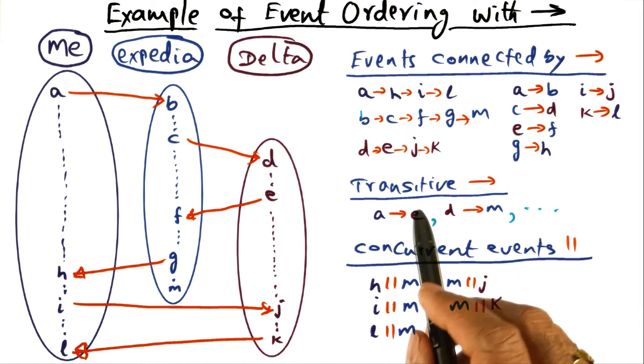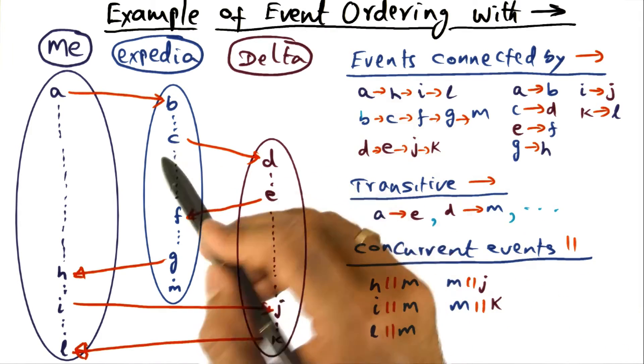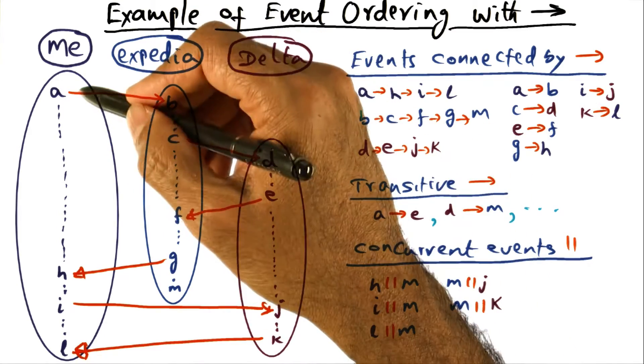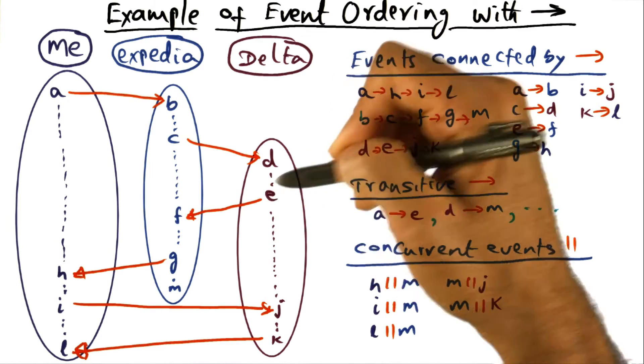And now we can also look at transitive events. So for instance, what is the relationship between, let's say, event E and event A? Well, it turns out that A must have happened before event E. And the reason is,